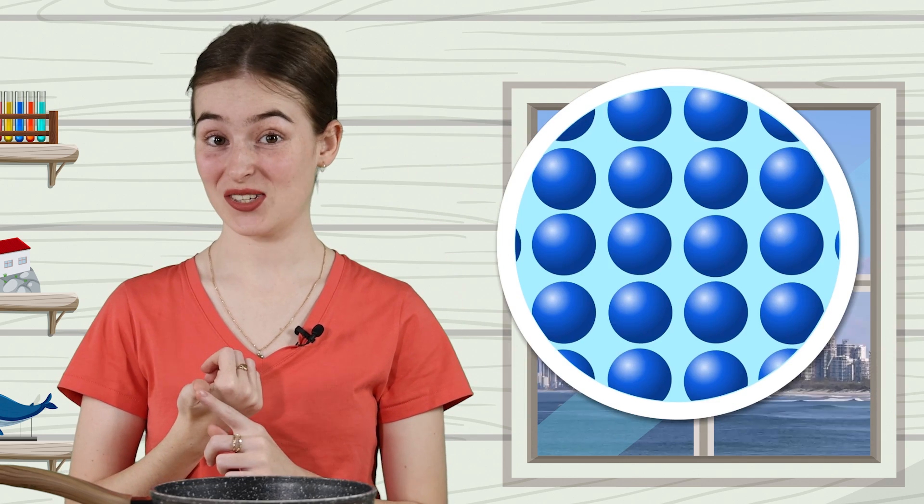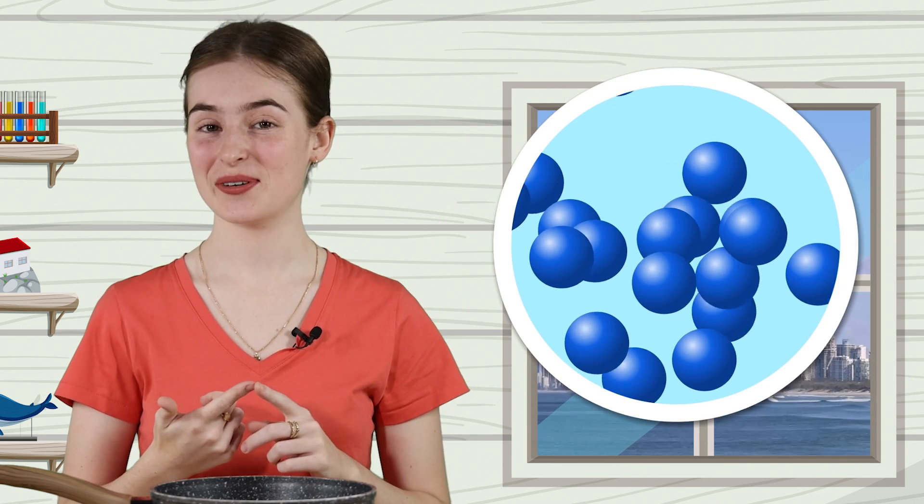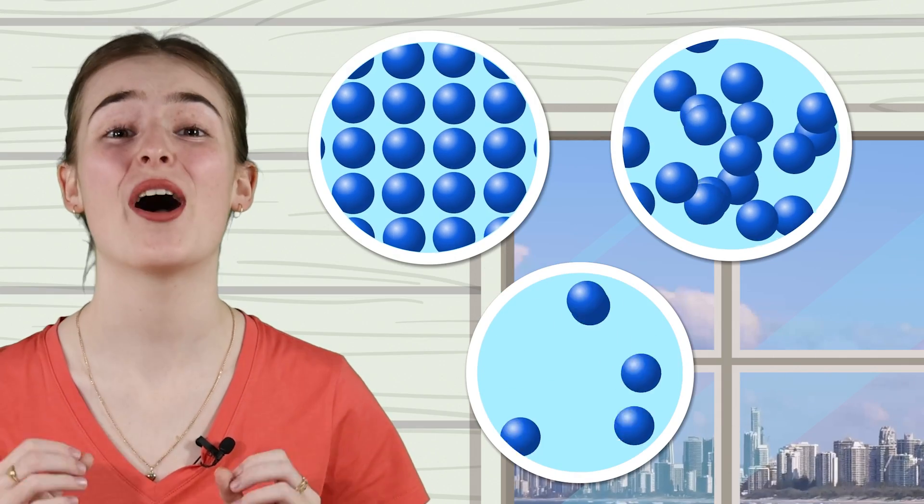All matter is made up of tiny particles. Whether it's in solid form, liquid form, or gas form, these particles are always in motion. How much these particles move is called thermal energy. Thermal energy can move between and within objects. This movement of thermal energy is called heat. And heat can move in three main ways.